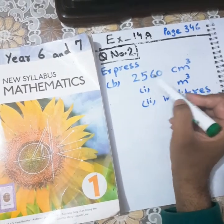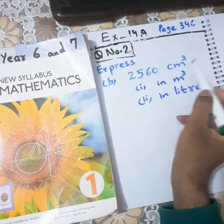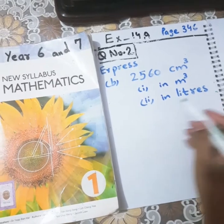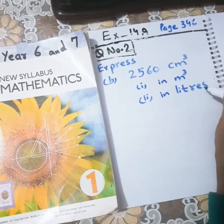Student, in question number 2 what we have to do is we have to convert 2560 cm³ into meter cubes and we have to convert it into liters also.